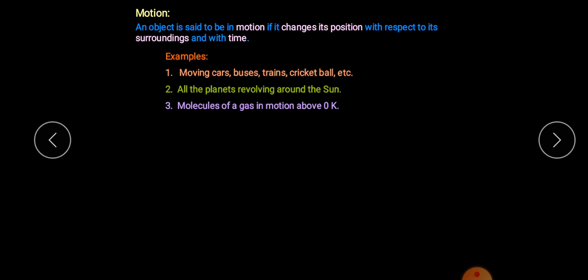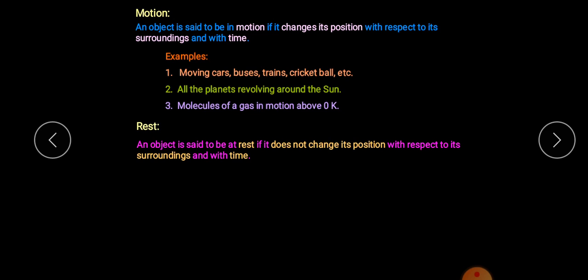You can think of more examples of motion such as a moving ball, moving car, running athlete, and so many others. Now how can we define rest? An object is said to be at rest if it does not change its position with respect to its surroundings and with time. That means if an object is stationary and not changing its place with time, then we say it is at rest.